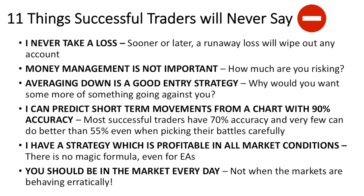Third: 'Averaging down is a good entry strategy.' Why would good traders say this? It's like saying you're wrong and you want more of something wrong — that's just not good, that's insane. Just get out of the trade, go chill, do something else, come back fresher. Fourth: 'I can predict short-term movements from a chart with 90% accuracy.' All successful traders know candles are not 100% accurate. If you rely on them too much, you're going to lose a lot of money.